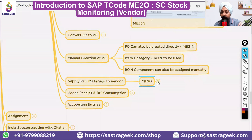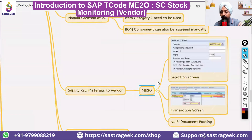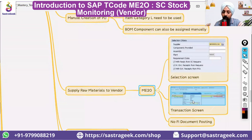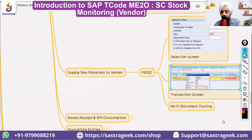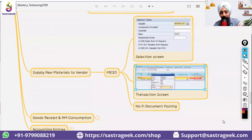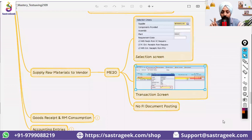We will be using transaction ME2O to supply raw materials to the vendor. The system will suggest, as per the PO we have created, how much raw material we need to supply. But you can supply any raw material to the vendor in any quantity. There will be no FI entries here, because — similar to the consignment process where we receive material from the vendor — here we are sending material to the vendor, but it's our material. So there are no financial entries; it's still in our books.